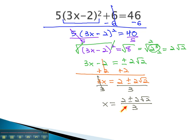In the case where they cannot be combined, we will stop here and say this is our final solution. x = (2 ± 2√2) / 3.